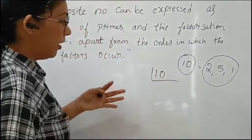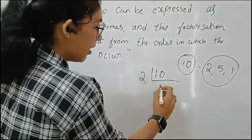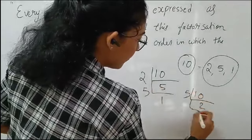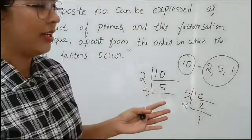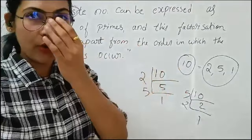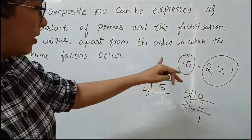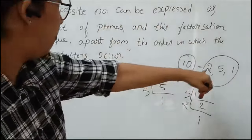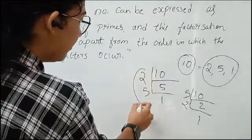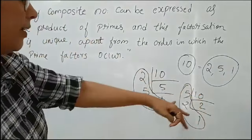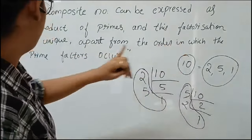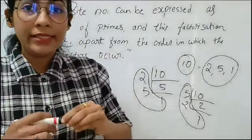That is, 10 can be factored starting with 2 or starting with 5. Whatever the order, there is no importance or significance to the order of the prime factors. Apart from the order in which the prime factors occur. So this theorem states that we can write the factorization either way, and whatever the order, there is no importance to that order.